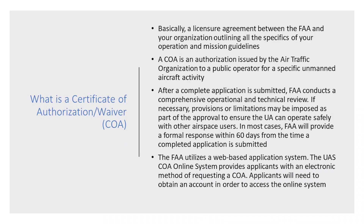Do I fly under Part 107 or do I get a COA — certificate of authorization or waiver — from the FAA? A lot of people are confused about what the process entails to get a COA, so we put this video together to help public safety agencies and public operators know what they really need before they begin the COA process and what some of the differences are between 107 operations versus COA operations. Basically, a COA is different from flying under 107. Part 107 is a pre-prescribed set of rules that already exist and govern the things that your agency wants to do — or doesn't want to do — with drones. A COA is basically a licensure agreement between the FAA and your organization which outlines the specifics of your operation using your missions and your unmanned aerial systems.